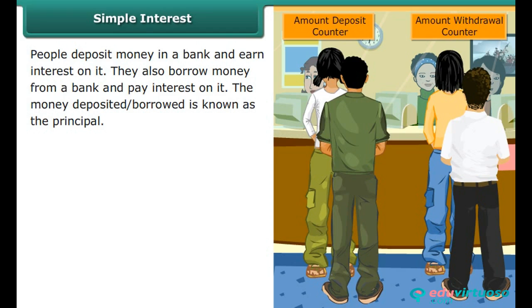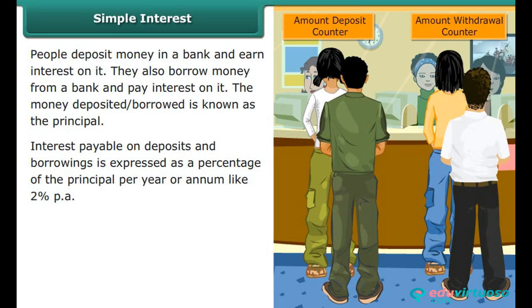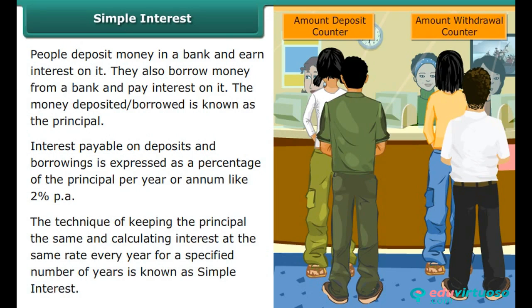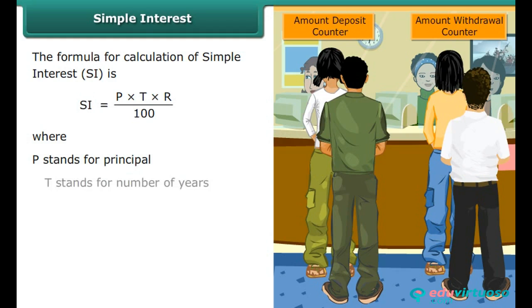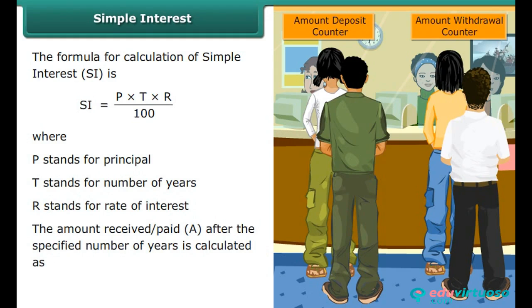Simple Interest: People deposit or borrow money from a bank and pay or earn interest. The money deposited or borrowed is the principal. Interest is expressed as a percentage of the principal per year (per annum). Simple interest keeps the principal constant at the same rate every year. Formula: SI = (P × T × R) / 100, where P = principal, T = number of years, R = rate of interest. Amount = P + SI.